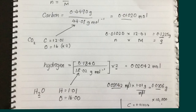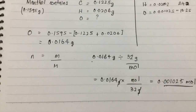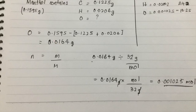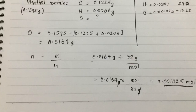Now that you have the mass of hydrogen and the mass of carbon, you can put both together to solve for the missing mass of oxygen. You're told the starting mass of menthol is 0.195 grams, so subtracting the mass of carbon and mass of hydrogen gives the mass of oxygen. Once you have the mass of oxygen, you convert it into moles by dividing that mass by the molar mass of oxygen.